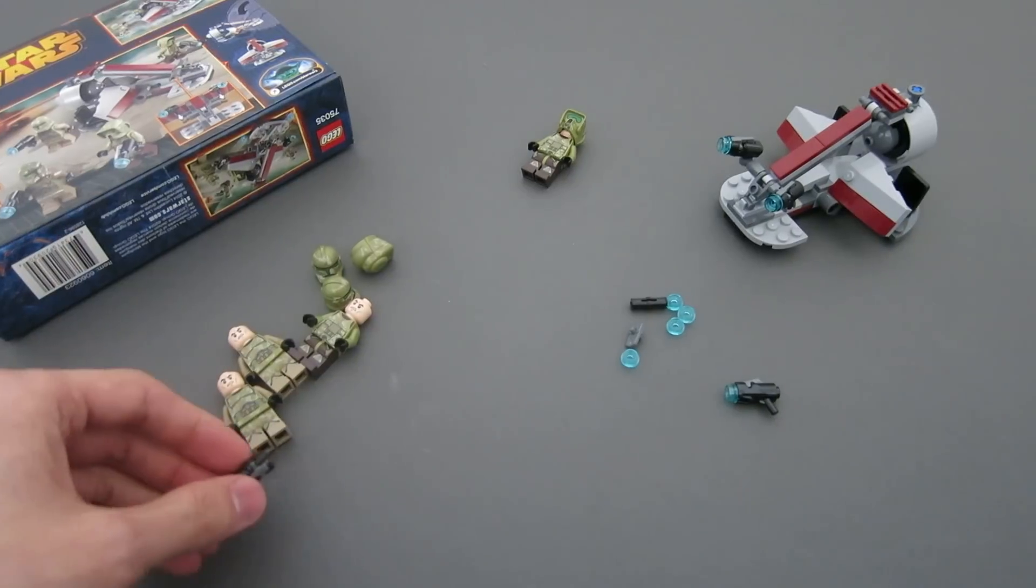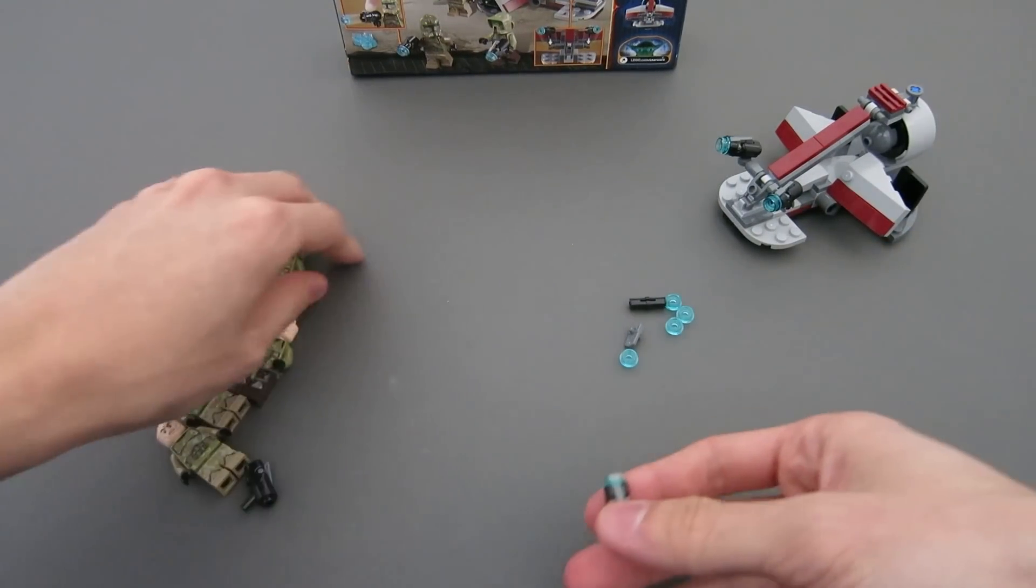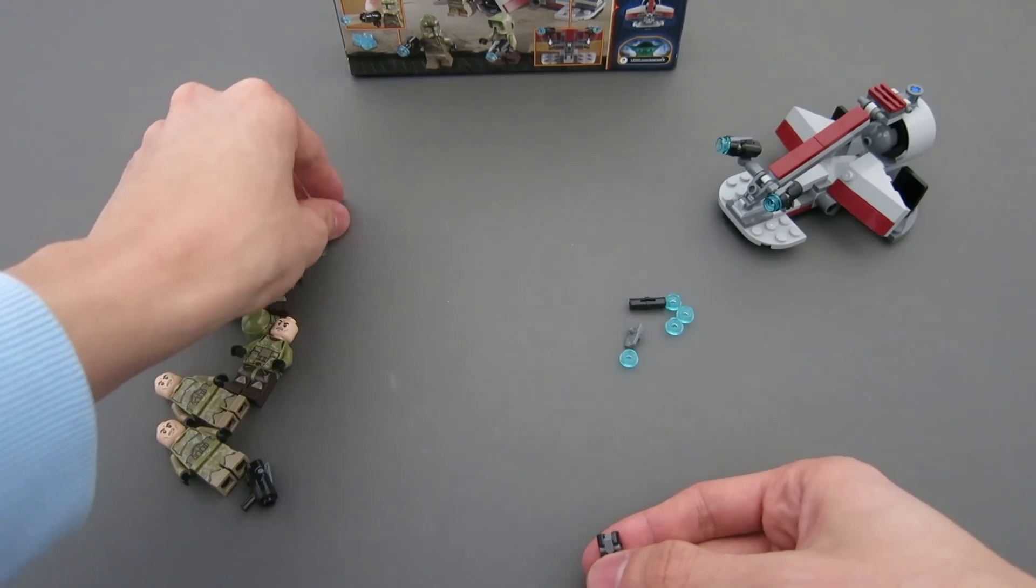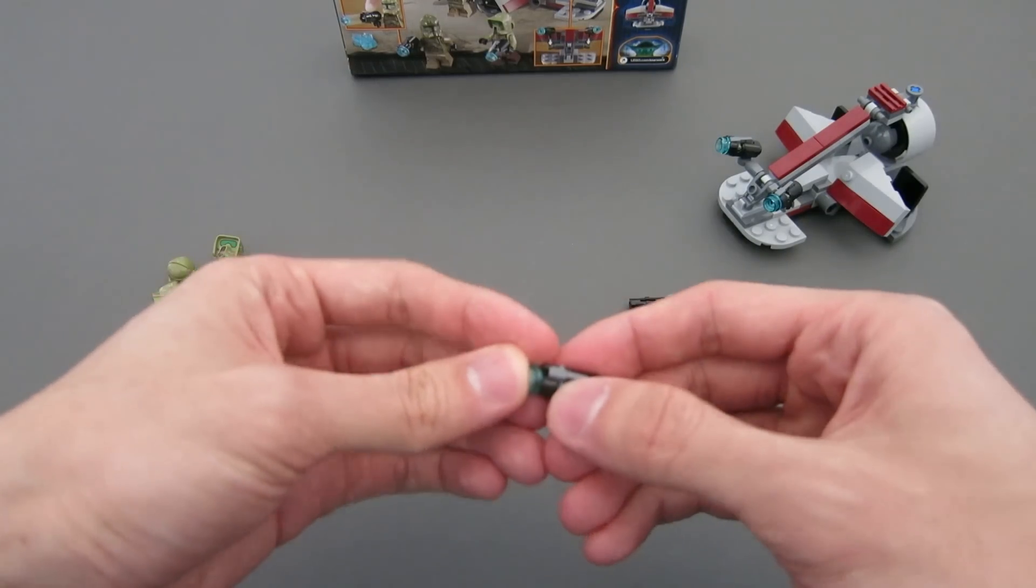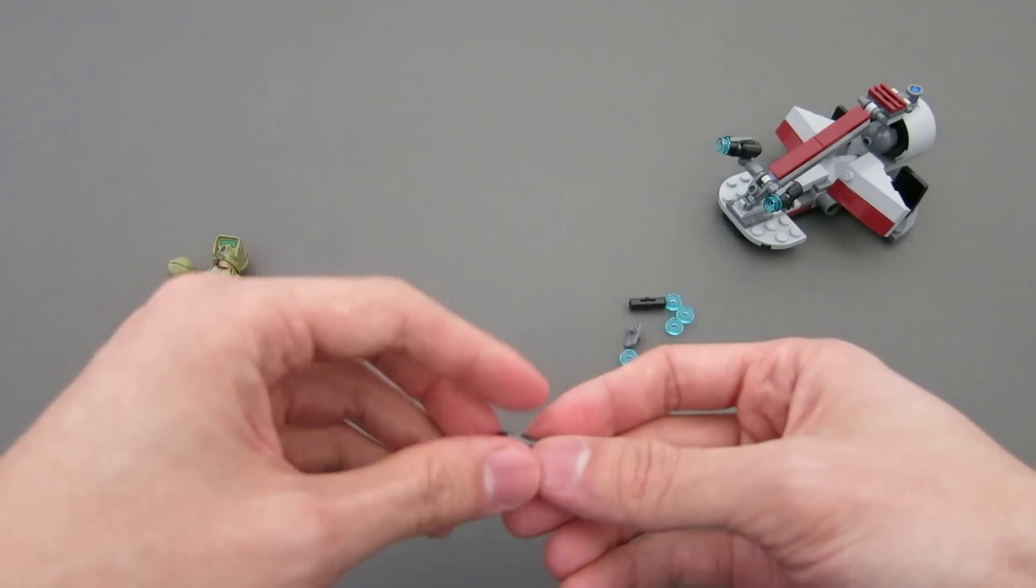So as you can see, I really like these shooters. They go quite far, unlike the flick fire missiles that LEGO has introduced for quite a while back. And in fact, they can actually go from here all the way to the back of the wall, which is about a 1 meter distance.